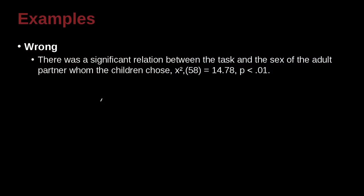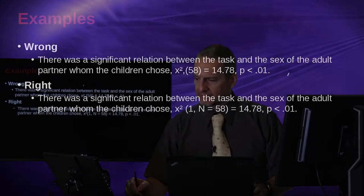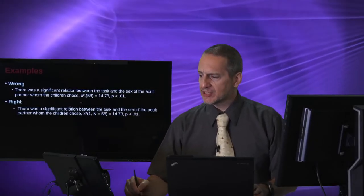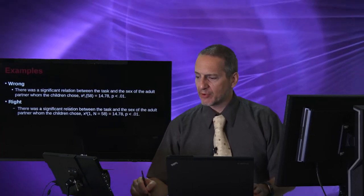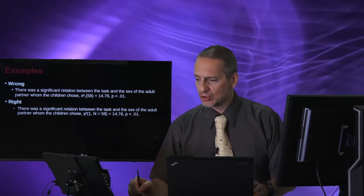There was a significant relation between the task and the sex of the adult partner whom the children chose. Chi squared 58 equals 14.78, probability less than 0.01. There was a significant relation between the task and the sex of the adult partner whom the children chose.